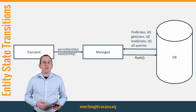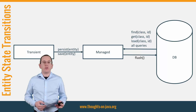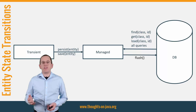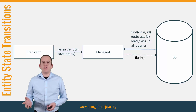When you create a new entity, it's in the transient state. It remains in this state until you attach it to the current persistence context. I will show you how you can do that with JPA's persist and Hibernate's save method in the following section. As long as an entity is in the transient state, it is not mapped to a database record and not matched by any persistence context.